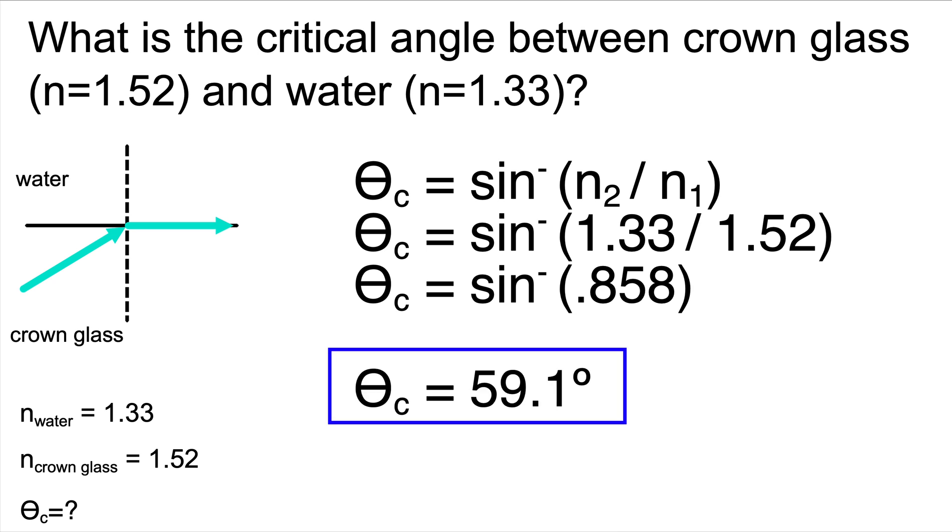So we'll take the inverse sine of 0.858. The answer to that is 59.1 degrees.